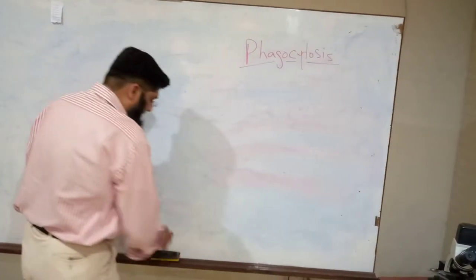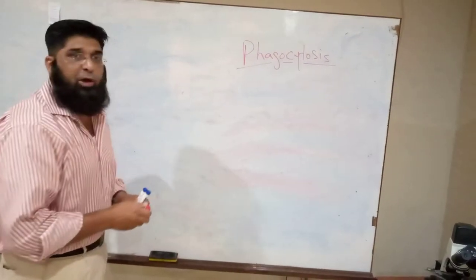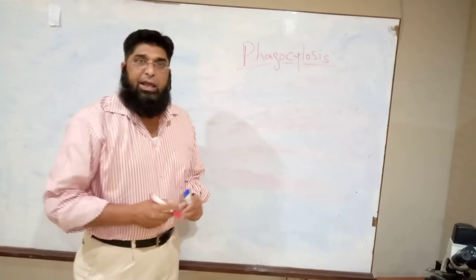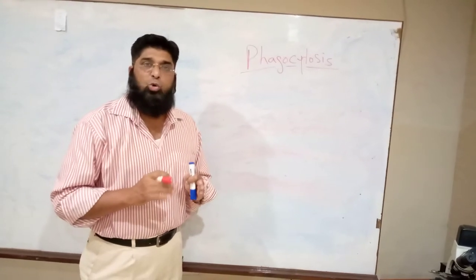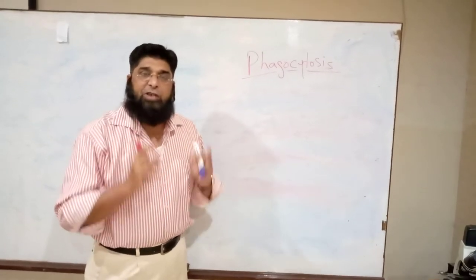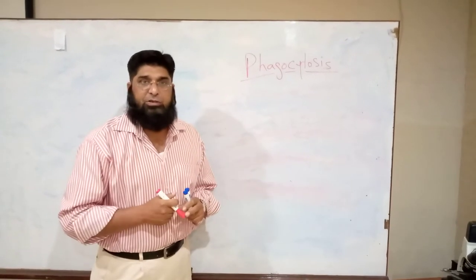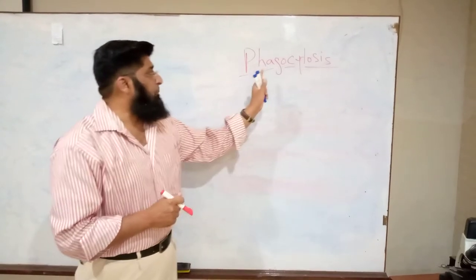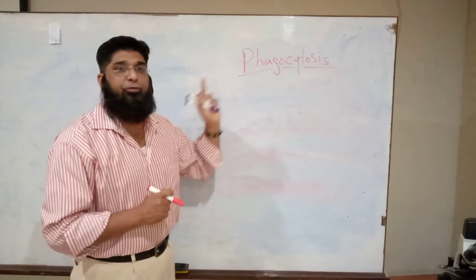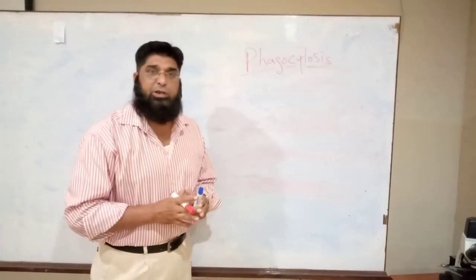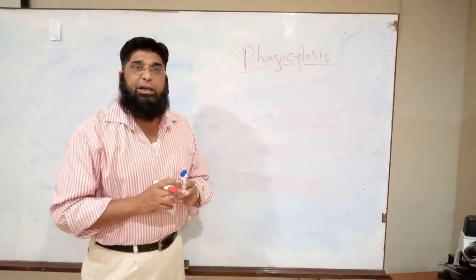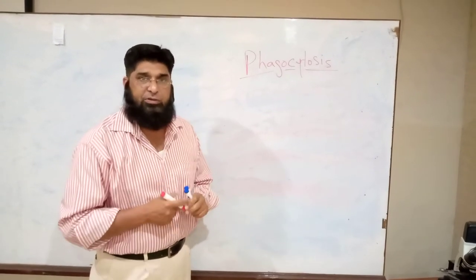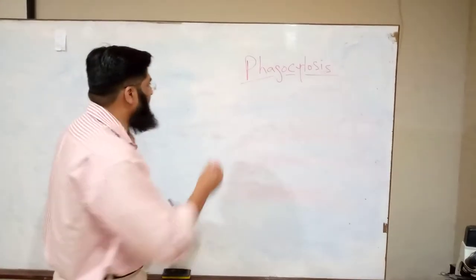The process of phagocytosis is divided into seven stages.